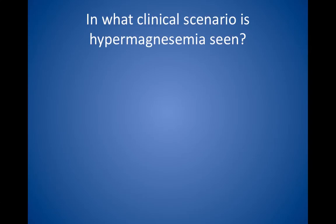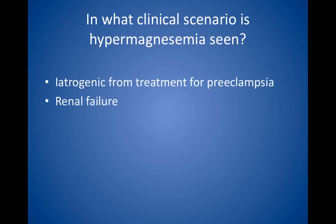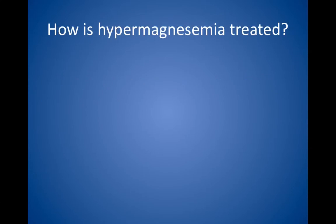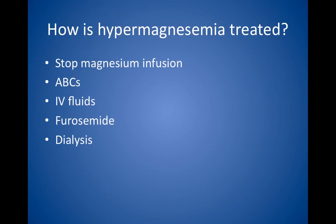In what clinical scenario is hypermagnesemia seen? Hypermagnesemia is classically iatrogenic in patients who are pregnant and are treated for preeclampsia with magnesium sulfate. It also commonly occurs in patients with renal failure. Patients who receive magnesium sulfate should be monitored carefully because the physiologic findings of hypermagnesemia are progressive. The initial sign is a decrease in deep tendon reflexes, then hypotension and respiratory failure occur sequentially. How is hypermagnesemia treated? First, stop any magnesium infusion. Remember the ABCs — airway, breathing, and circulation — and intubate the patient if necessary. If the patient is stable, start IV fluids. Furosemide can be given next, if needed, to cause a magnesium diuresis. The last resort is dialysis.